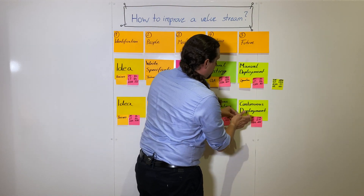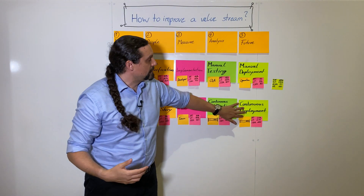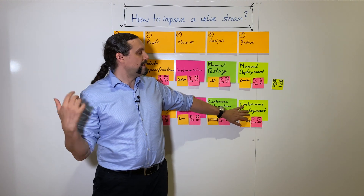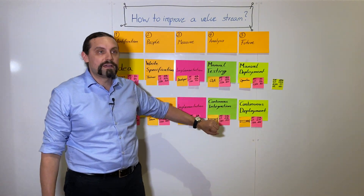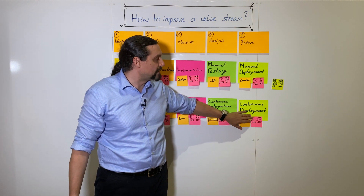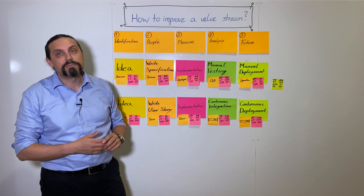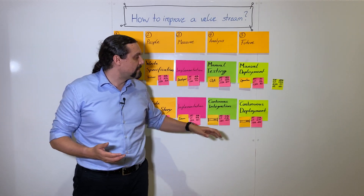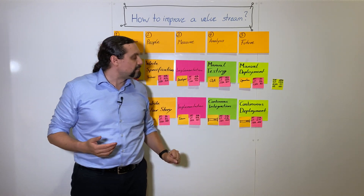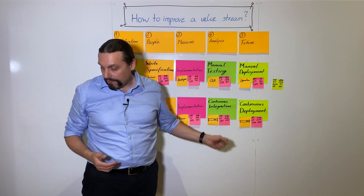The next step will be continuous deployment. There we want to automatically deploy directly into UAT and then also directly into production if everything is okay. Again here we have a process time of 0.1 hour, lead time of 0.1 hour, and a target percentage complete and accuracy of 100 percent.